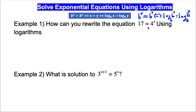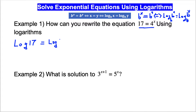How can you write the equation 17 equals 4 to the exponent x using logarithms? As we see here, 17 and 4 do not have a common base, so we convert it. We can write this using the common log — we can use any log, natural or common, but whatever log we use on one side, we have to use the same on the other side. So we take the common log of 4 to the exponent x.